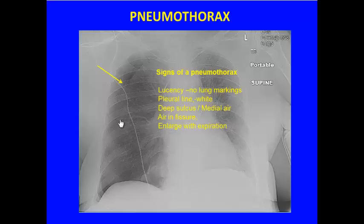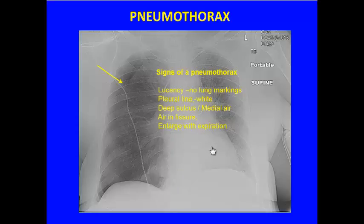We can sometimes see the air tracking into the fissures, and the pneumothorax can appear to enlarge with expiration, but that's really just a function of the overall decrease in volume of the lungs. So an expiratory chest x-ray can accentuate a pneumothorax.